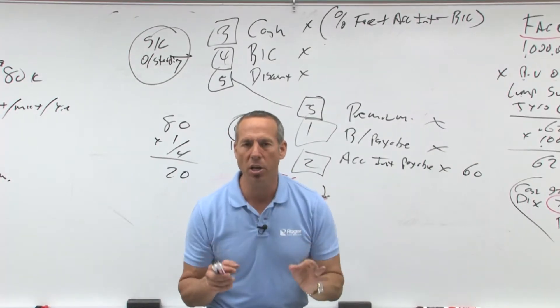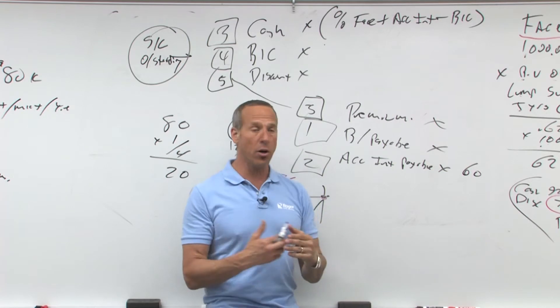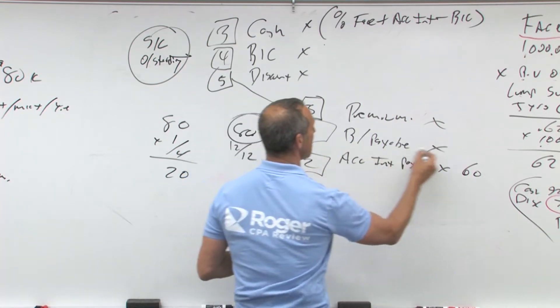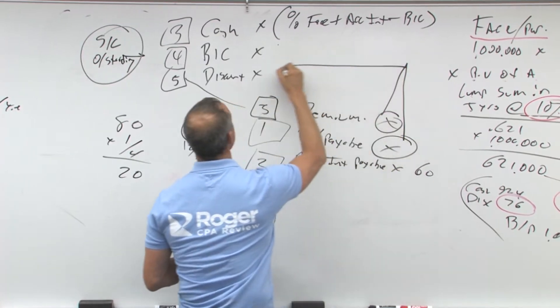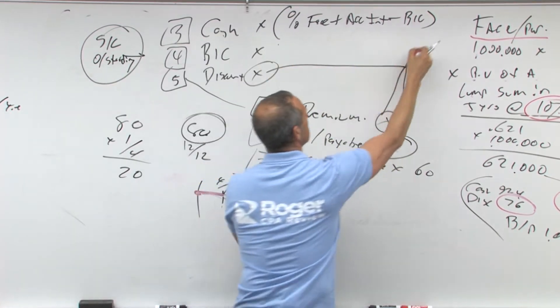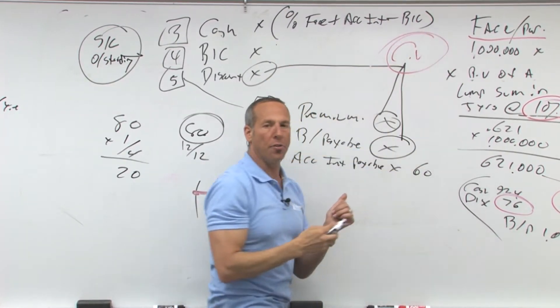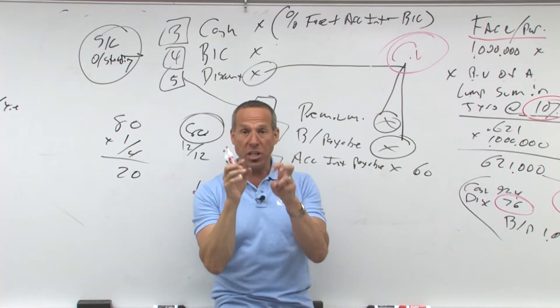Now, when we talk about the carrying value of the bonds, what is the carrying value of the bonds? It is going to be the face of the bonds, net of either premium or net of discount. That is called the carrying value of the bonds. It is also known as your amortized cost.